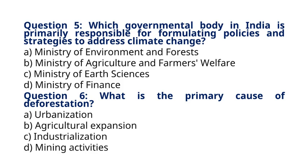Question 6: What is the primary cause of deforestation? A. Urbanization. B. Agricultural expansion. C. Industrialization. D. Mining activities. The correct answer to question 6 is option B: Agricultural expansion. Explanation: Deforestation primarily occurs due to the conversion of forests into agricultural land to meet the growing demand for food.